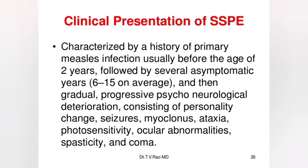Clinical presentation of SSPE: Generally characterized by a history of primary measles infection before the age of 2 years, followed by several asymptomatic years — 6 to 15 years on average — and then gradual, progressive psychoneurological deterioration consisting of personality changes, seizures, myoclonus, ataxia, photosensitivity, ocular abnormalities, spasticity, and coma.